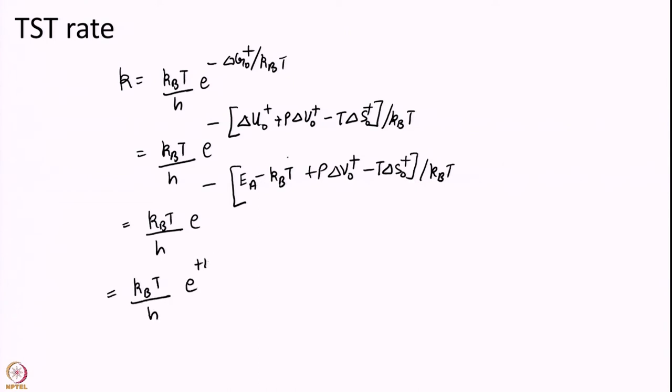So, I will just simplify this a little bit. I will write this term first. So, you see I have KT over KT that gives me 1 and minus into minus gives me plus 1. Then I will write e to the power of minus P delta V naught over KT and then I will write e to the power of plus delta S naught over KB and finally e to the power of minus EA over KBT.